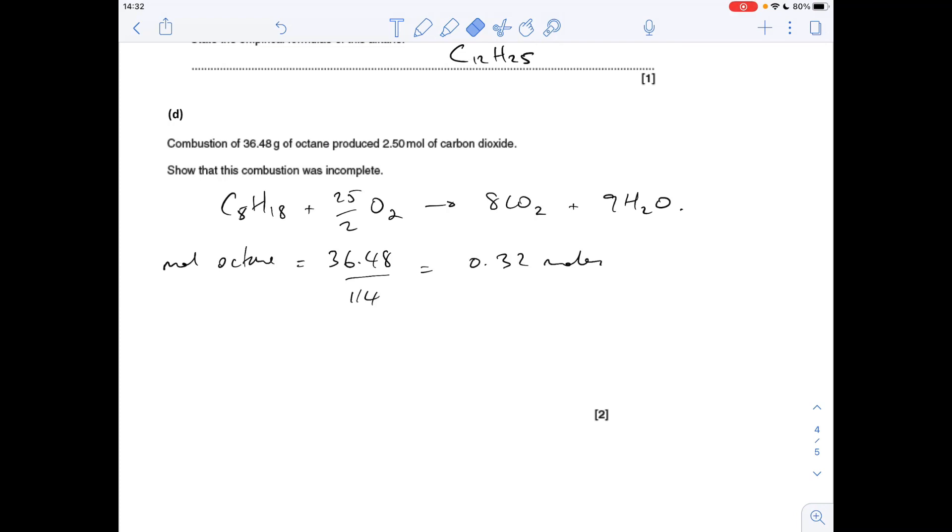We've got 0.32 moles of octane: 36.48 over its Mr. Complete combustion would produce eight times as many moles of CO2 - see there, that's coming out at 2.56 moles of CO2. Well, this reaction's only produced 2.5 moles of carbon dioxide, and so it must be incomplete combustion. It hasn't generated enough moles of CO2.